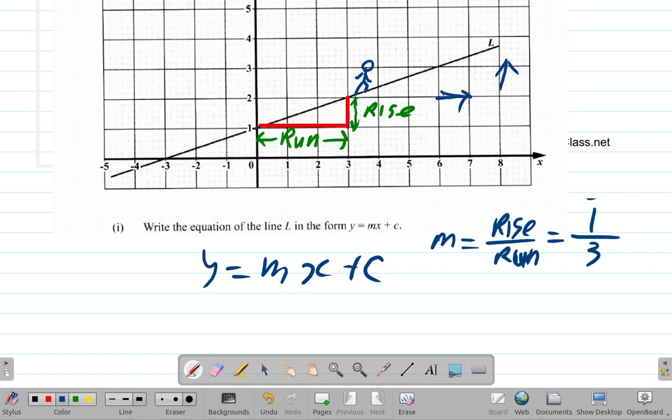What's the y-intercept? It's right here, it's 1. So the equation is y equals the gradient 1/3 times x plus the y-intercept 1. That is our answer: y equals 1/3x plus 1.